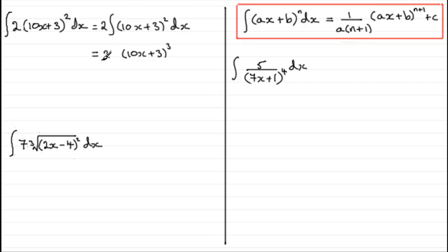We add 1 onto that power. And then we must divide through by that new power 3 and also this value here, the a part of the ax + b, the 10. And we mustn't forget that constant of integration, plus c.